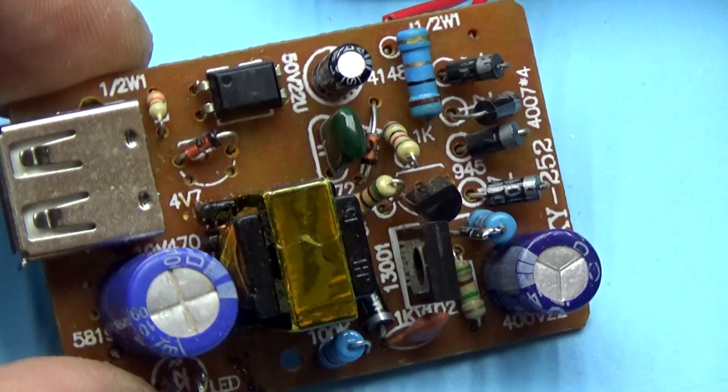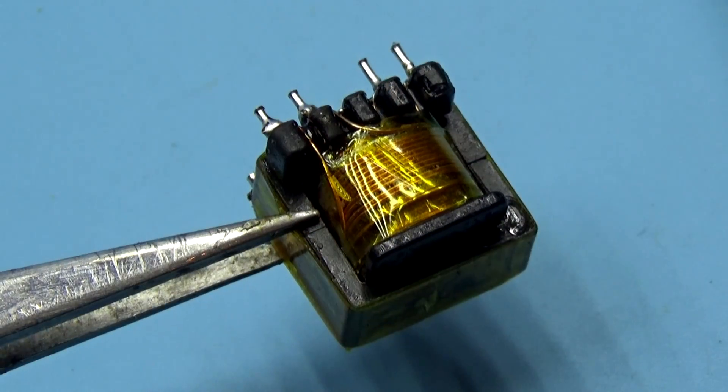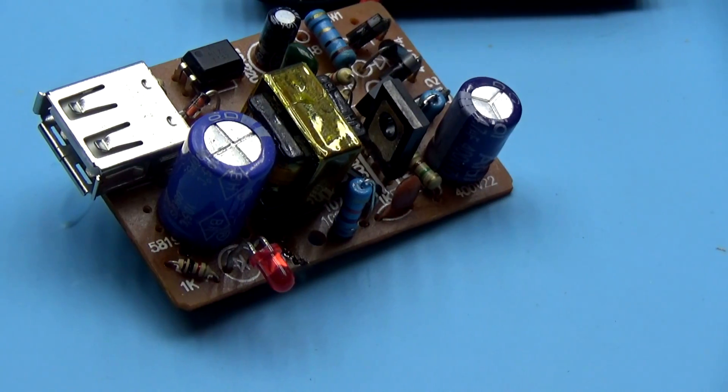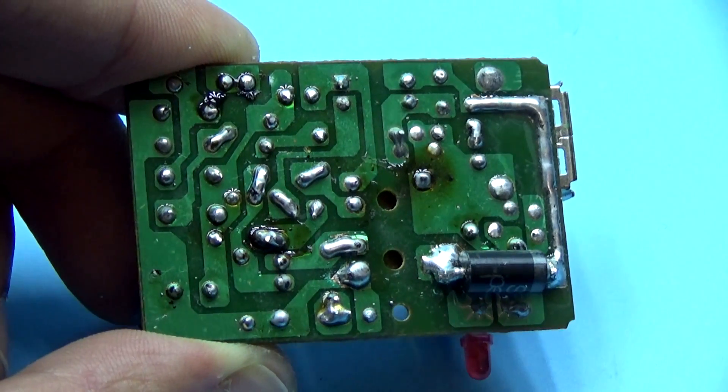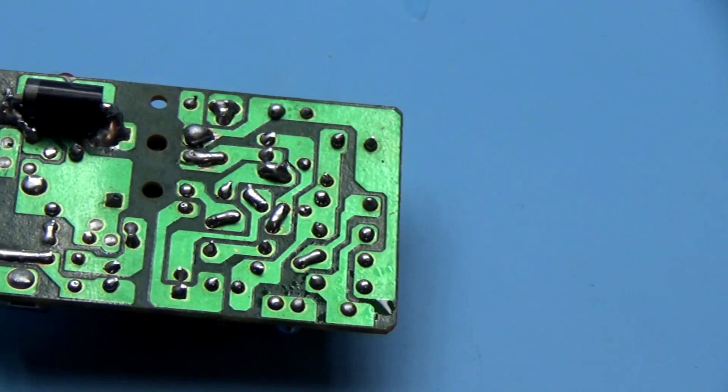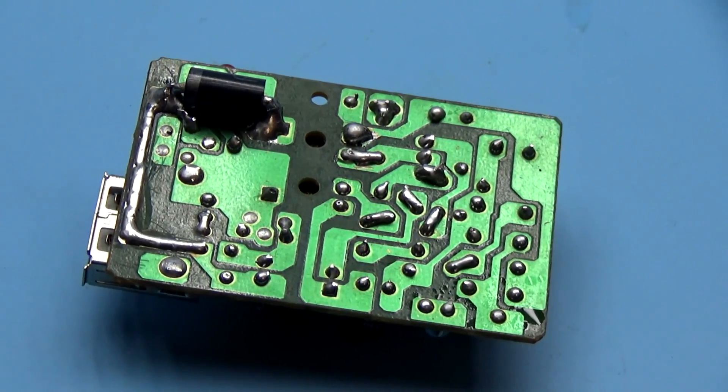This is cool, of course. Anyway, I will emphasize once again that the transformer core needs to be changed. It works beyond its capabilities. Then I straightened out some badly installed components, refreshed the soldering. In such budget units, it's extremely unreliable. Well, in the end everything was cleaned from the flux. The power supply is ready.